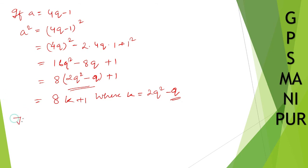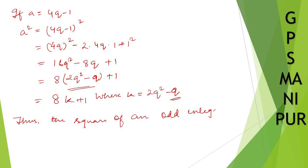Therefore, in both cases, the square of an odd integer can be represented in the form 8k plus 1. Thank you so much, we will meet in the next video.